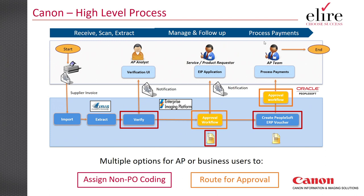Invoices that require approval can be handled either through EIP workflow or within PeopleSoft. A sizable percentage of PeopleSoft customers have already invested in invoice approval workflow within PeopleSoft and want to retain it. In that case, the solution can feed invoices straight through and create them in PeopleSoft so that your existing workflow takes them from there. The invoice image, captured by Canon's EIP, remains retrievable from within PeopleSoft — it's stored in the Canon repository, not as an attachment slowing down your PeopleSoft environment.